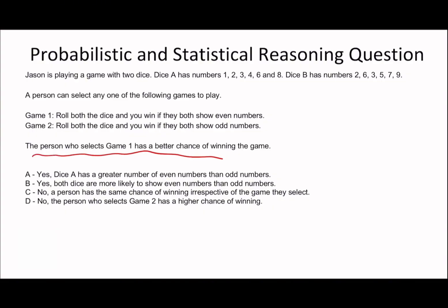Let's have a look at this one. So the person who selects game one has a better chance of winning. So game one, roll two dice and you win if they both show even numbers. Roll two dice and you win if they both show odd numbers. So game one, even numbers is 1, 2, 3, 4. So remember, for both dice to show even numbers is the probability of each one multiplied together. So it's 4/6, even on the first one, 2/6 on the second one. So that's 8 out of 36.